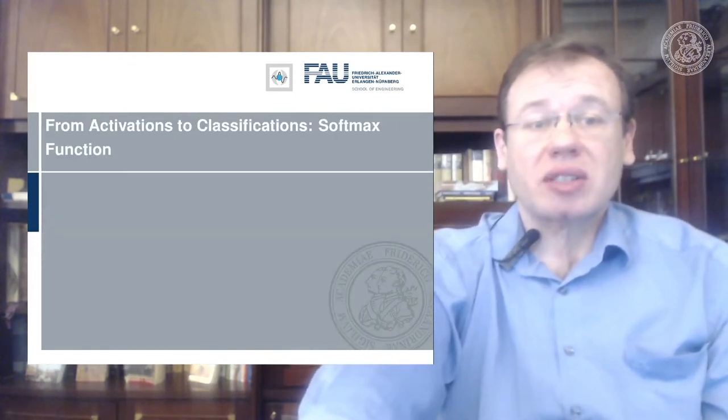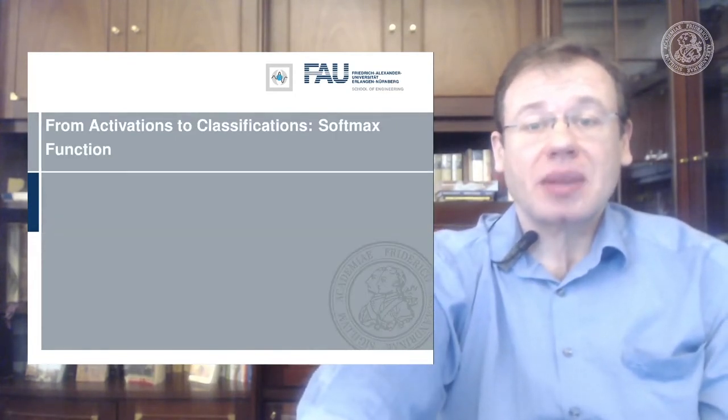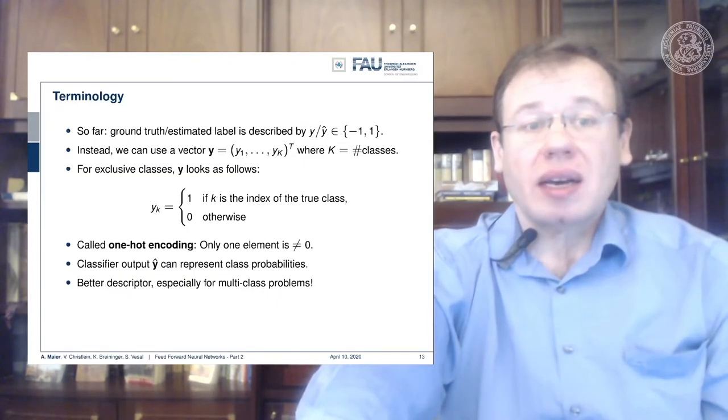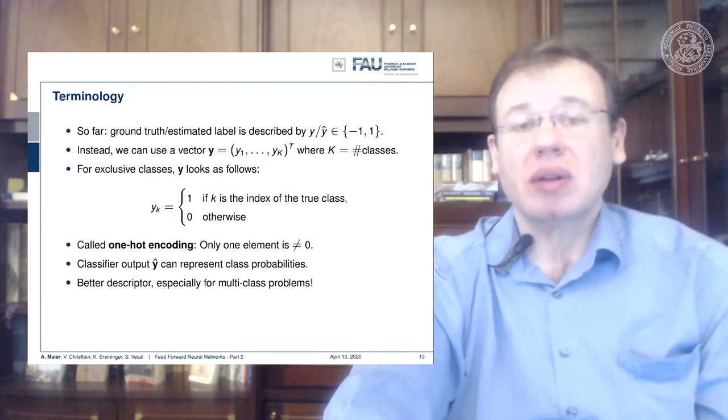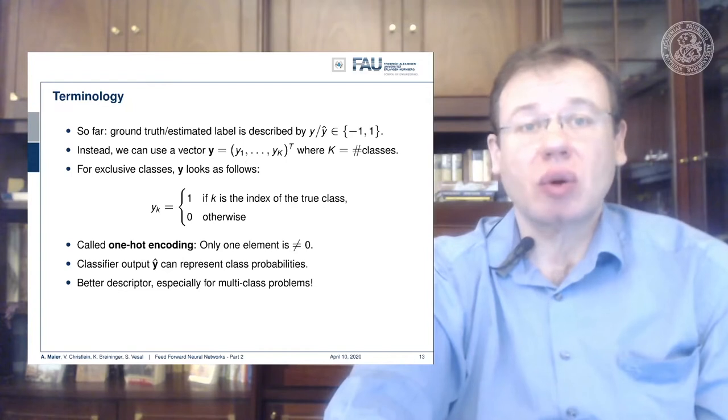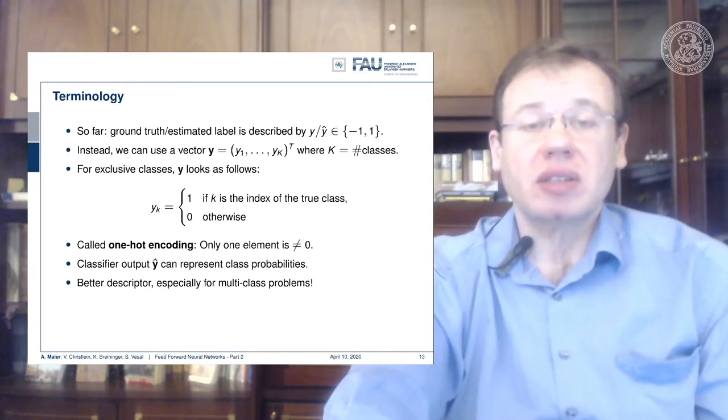Let's start with activation functions for classification. So far we've described ground truth by labels minus one and plus one, but we could also have classes zero and one. This is really only a matter of definition if we do a decision between two classes.